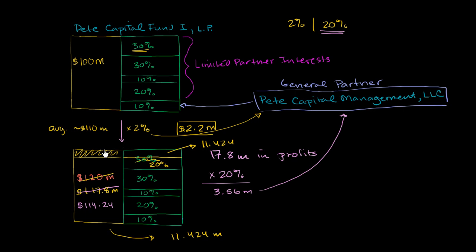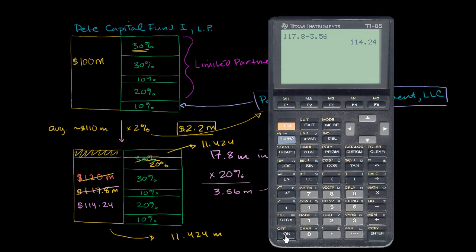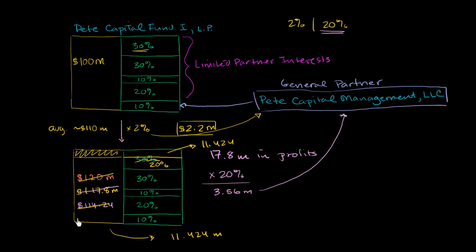Usually it's at the end of the month, at the end of the quarter, or the end of the year. And so then the fund will be left with, let me take the calculator out again. The fund will now be left with 114.24 minus 11.424, which is going to be 102.816.